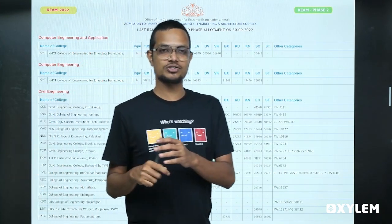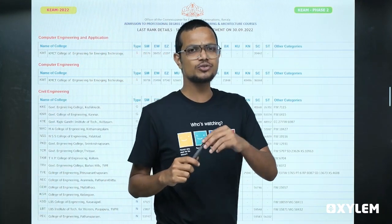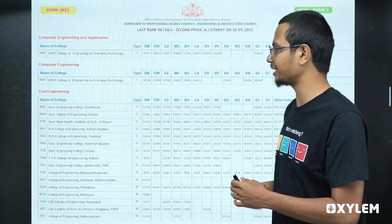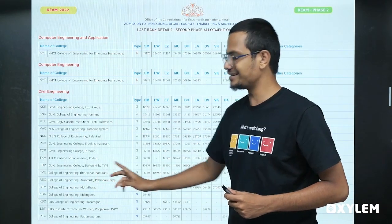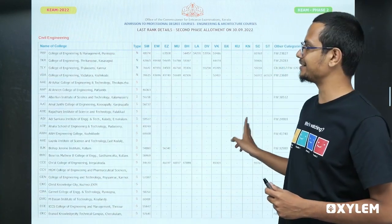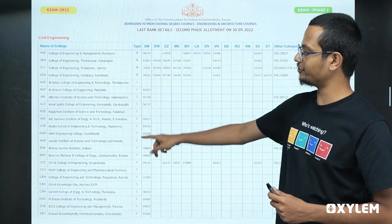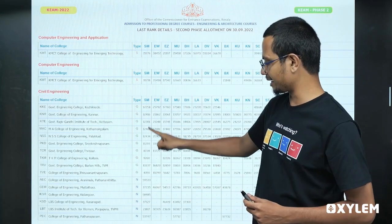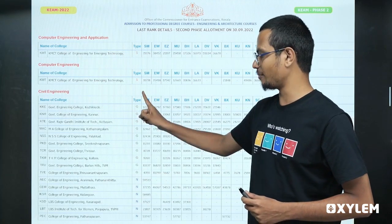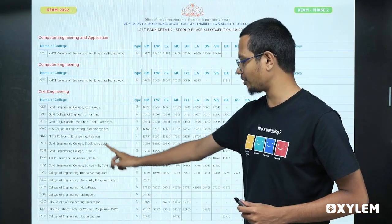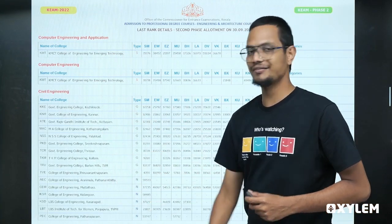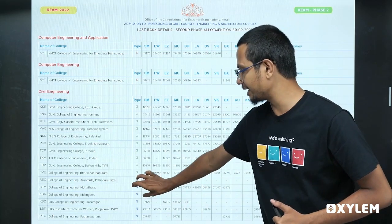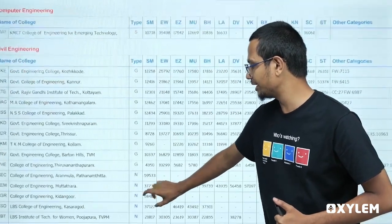There are many types of courses. If you are choosing, you should choose Computer Science Engineering. At the level of Civil Engineering, there are many relevant colleges that go into government colleges.